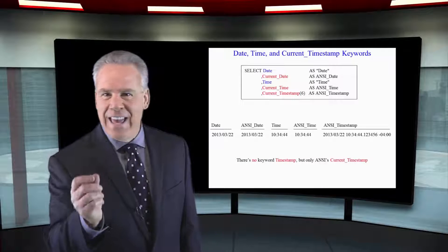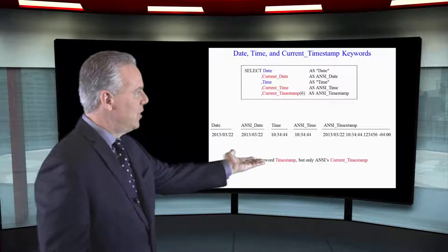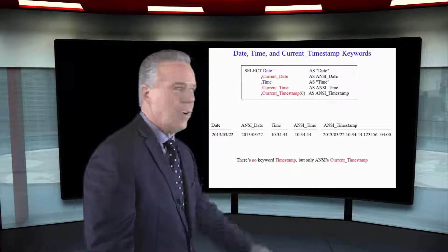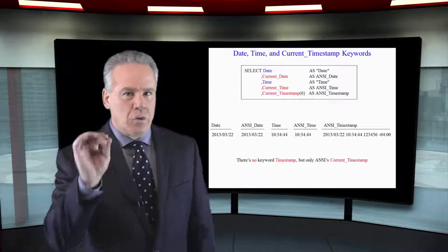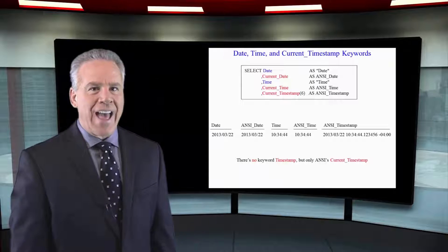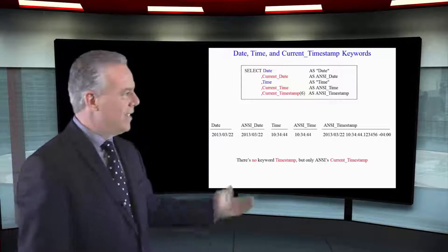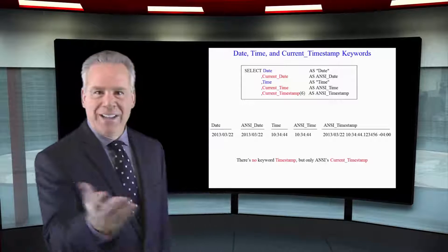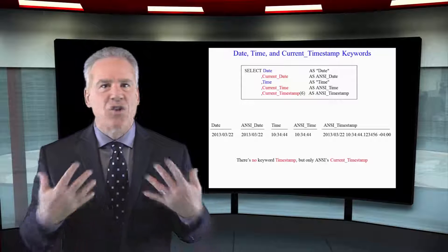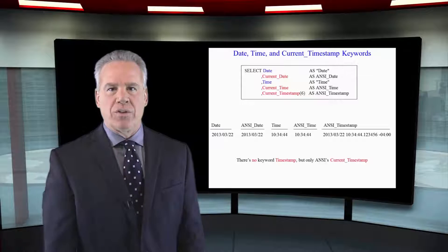You will even get what time zone this is in — a minus four here, from Greenwich Mean Time. And that's how dates and times and timestamps can be gotten so easily, just with the keywords.